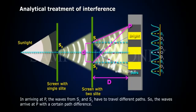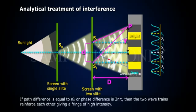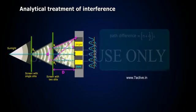the waves from S1 and S2 have to travel different paths. So, the waves arrive at P with a certain path difference. If path difference is equal to n lambda, or phase difference is 2n pi, then the two wave trains reinforce each other, giving a fringe of high intensity.